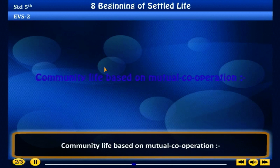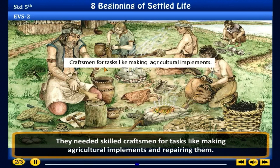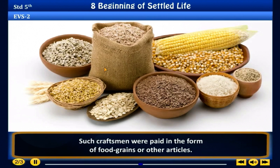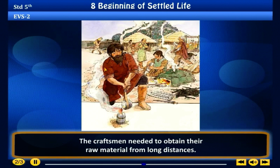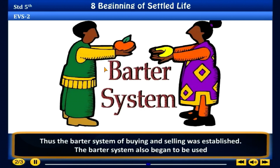Community life based on mutual cooperation. The farmers in the village settlement were now producing surplus food. They needed skilled craftsmen for tasks like making agricultural implements and repairing them. Such craftsmen were paid in the form of food grains or other articles. The craftsmen needed to obtain their raw material from long distances, and the price of this raw material was also paid in food grains or articles. Thus the barter system of buying and selling was established.